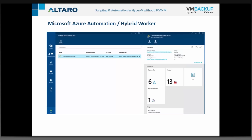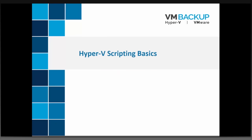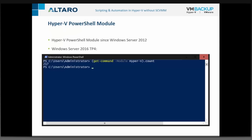Let's talk about Hyper-V scripting basics. The PowerShell module for Hyper-V was introduced in Windows Server 2012 and Windows 8 — the first official PowerShell module for Hyper-V. Windows Server 2008 and 2008 R2 didn't have many modules, making automation quite difficult. The real good stuff comes with Windows Server 2012 and later.